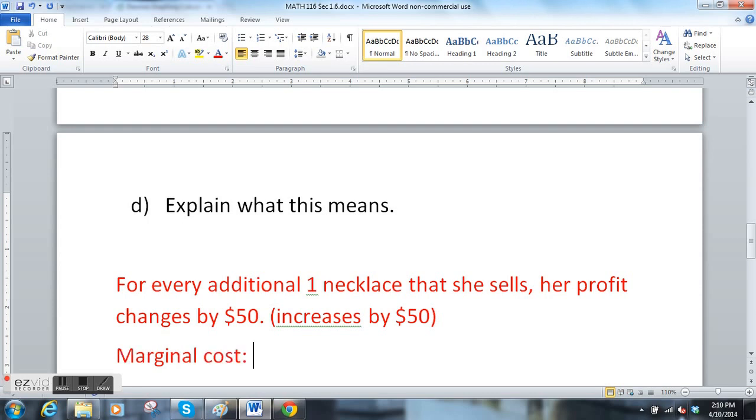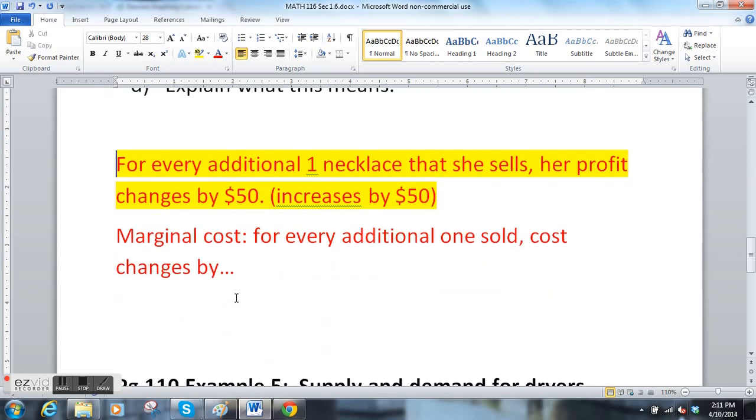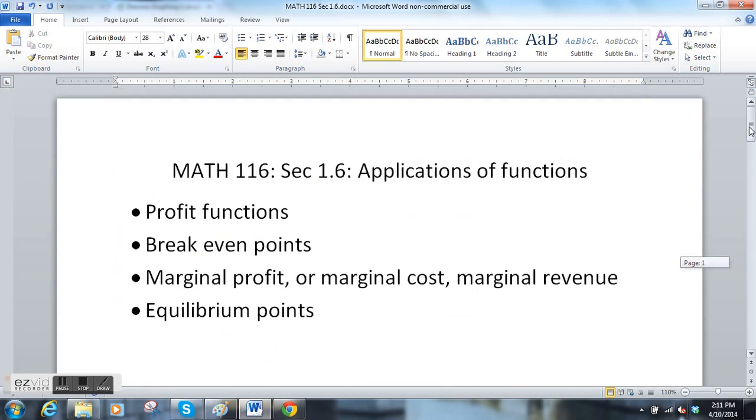Anytime you have the word marginal, it means the slope of the change. Your marginal cost would be, if you want to interpret the marginal cost, you would say for every additional one sold, every additional necklace sold, the cost changes by blank, whatever it was. So marginal cost is always having to do with slope and the rate of change.